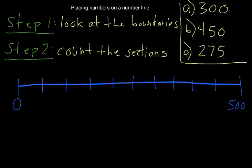In this video I'm going to talk about placing numbers on a number line. Step 1 says look at the boundaries. You need to look at where the number line starts and where it finishes. In this case, this number line goes from 0 to 500.